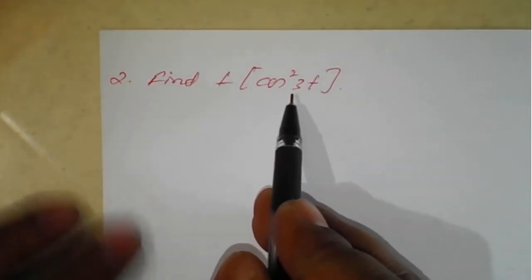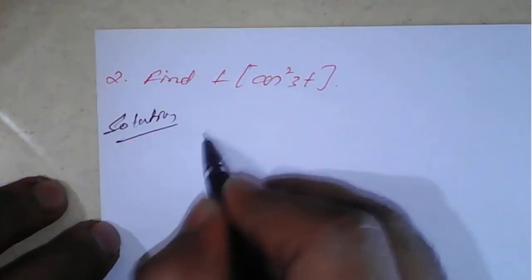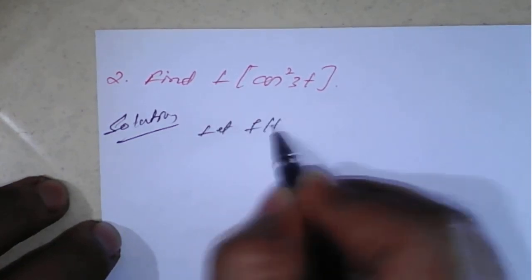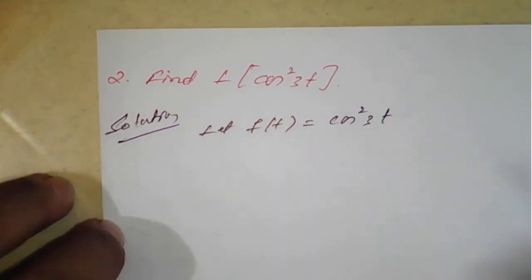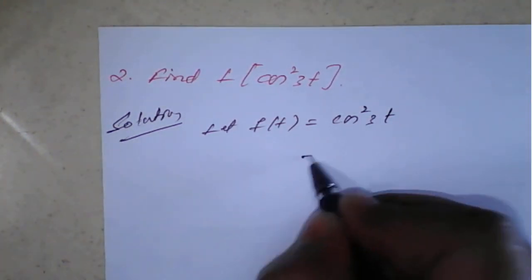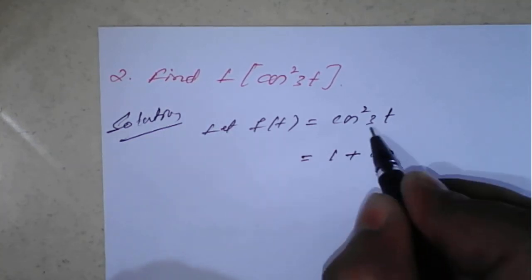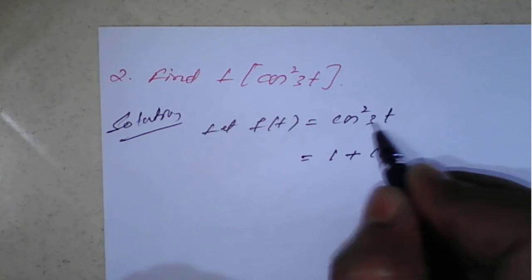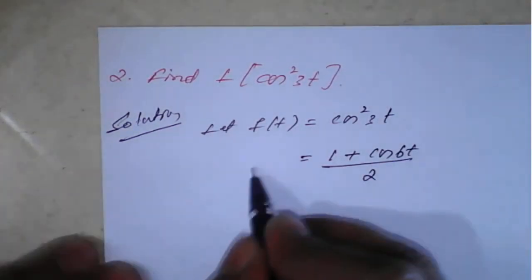For the next example, find the Laplace transform of cos²(3t). Let f(t) = cos²(3t). This is not a direct problem, so we use the identity: cos²θ = (1 + cos2θ)/2. Here 2 times the angle means 2×3 = 6, so f(t) = (1 + cos(6t))/2.